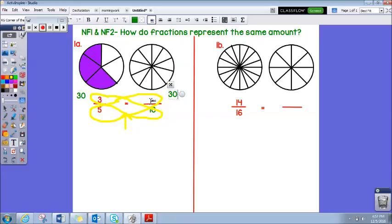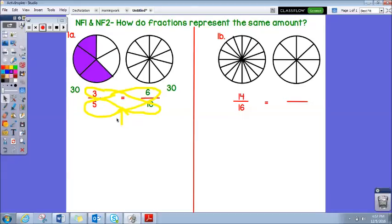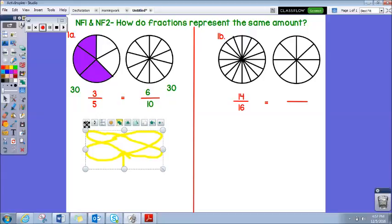So what times five gives you thirty? Let's count by fives. Put up your fingers as you count. Five, ten, fifteen, twenty, twenty-five, thirty. Six times. So six times five gives us thirty. So let me move the little loops here so you guys can see, but look at our new fraction that we got. Six tenths.